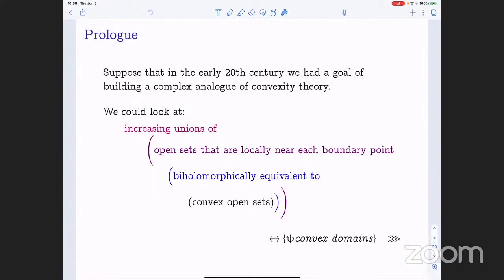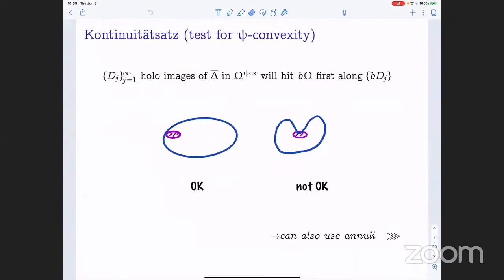One way to describe the collection of pseudoconvex domains is just this collection of domains you get by starting with convex open sets and applying these various expansion steps. I've just told you how to build pseudoconvex open sets. There's a question of how, if somebody hands you an open set, how do you test it. One of the most useful tests for pseudoconvexity is known as the continuity principle.